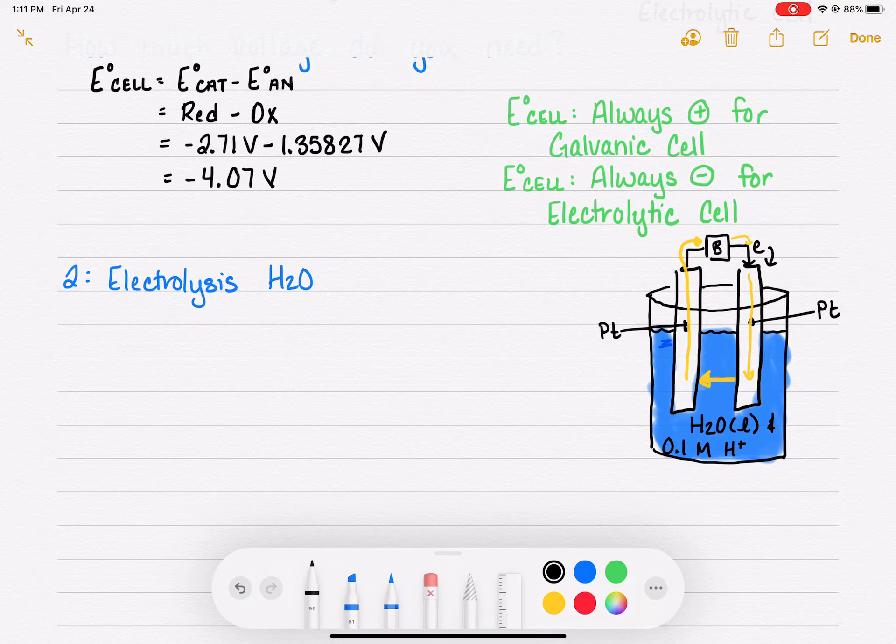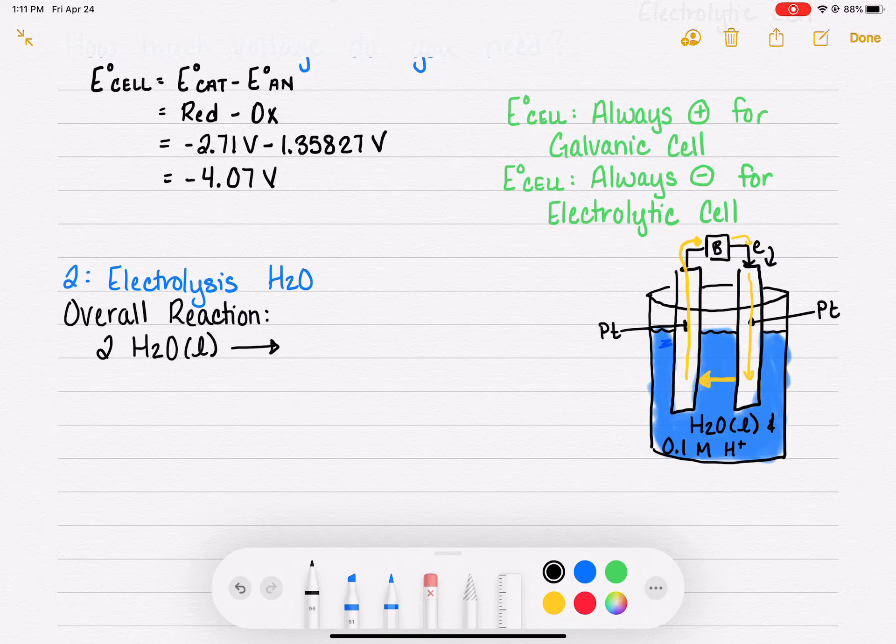Our overall reaction when we're doing the electrolysis of water, we know from trial and error and experimentation the overall reaction is that we have two water molecules liquid and they are producing two molecules of H2 gas and one molecule of O2 gas. That's our overall reaction.